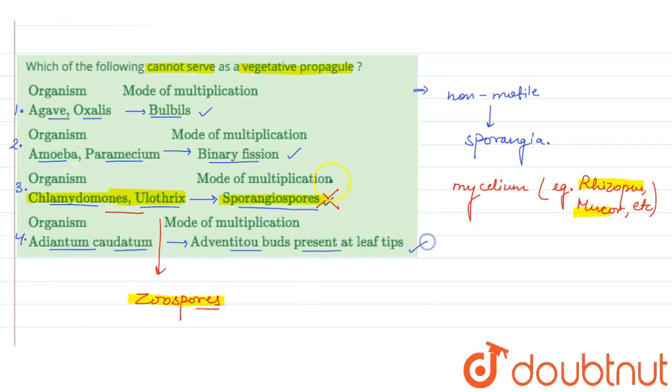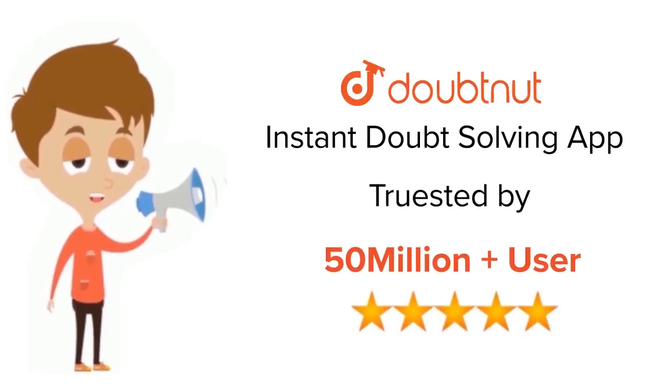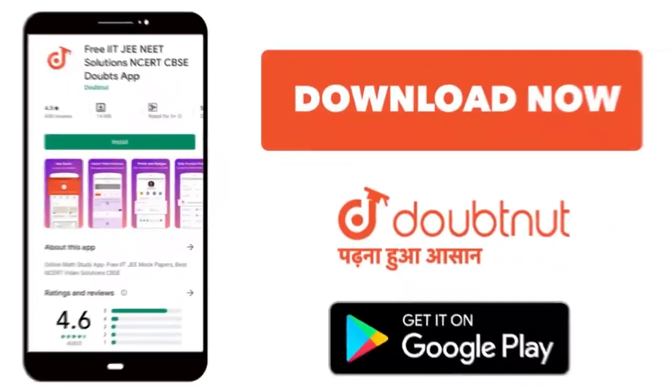The correct answer here is the third option. For class 6 to 12, IIT JEE and NEET level, trusted by more than 5 crore students, download Doubtnet app today.